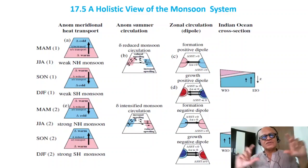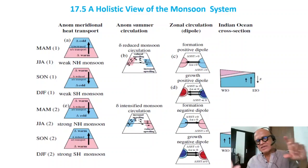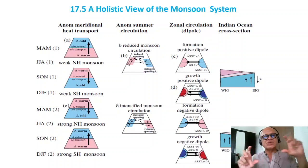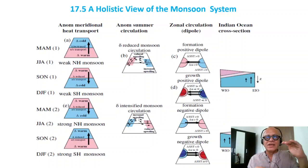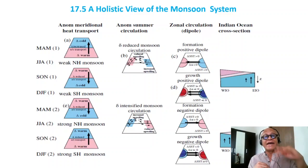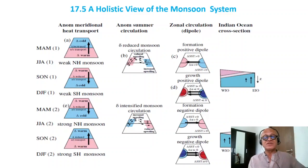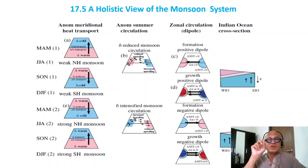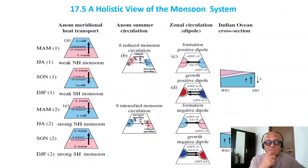One thing to note is that we've been switching between heat content and SST without distinguishing them very much. We also haven't said heat content down to what depth. There isn't always a very clear relation between heat content and the SST anomaly. People always look for correlation between the monsoon and SSTs, but monsoon and heat content is a different story. It's not always clear that increased heat storage corresponds to increased SST, because there is the thermocline in the middle and all the mixed layer heat budget processes. So one has to be careful about those details.